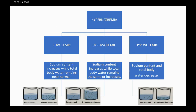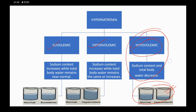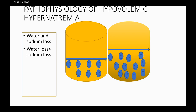In hypovolemic hypernatremia, there is loss of both sodium and water, but loss of water is more compared to loss of sodium. In euvolemic hypernatremia, sodium content increases while total body water remains near normal. In hypervolemic hypernatremia, sodium content increases while total body water remains the same or increases.